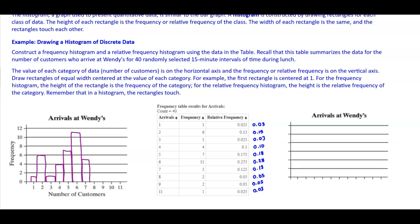For 8, the frequency is 2, so we go up to 2. For 9, it also has 2. For 10, the frequency is 0. And for 11, the frequency is 1. Let's label all the bars: 1, 6, 1, 4, 7, 11, 5, 2, 2, 0, and 1. There is our histogram for our frequency distribution.